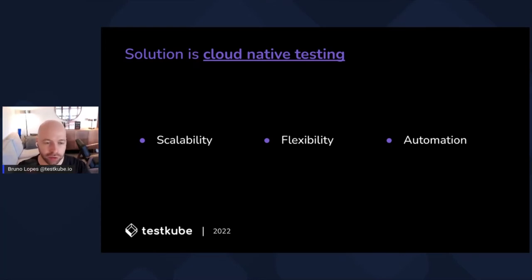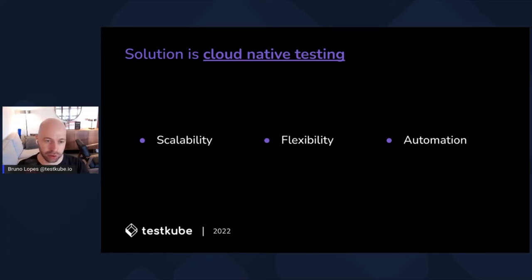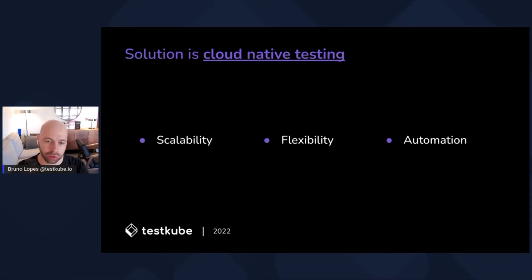Cloud Native Testing does not necessarily mean that underneath it is Kubernetes. Another principle is flexibility: you should be able to adapt to different testing needs — integration tests, end-to-end tests, load tests, security tests, all kinds of tests. Based on the business, you might choose different approaches. The architecture should be flexible, and the tools should adapt to you — not you adapting to the tool.